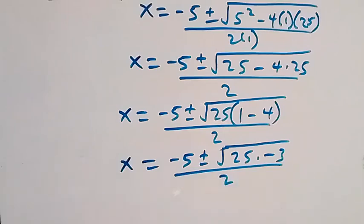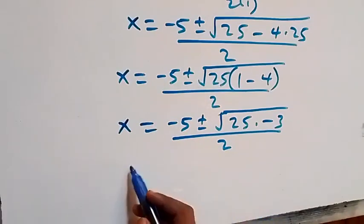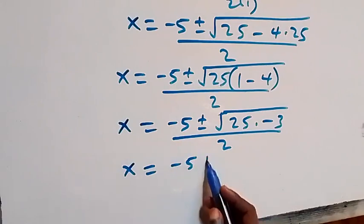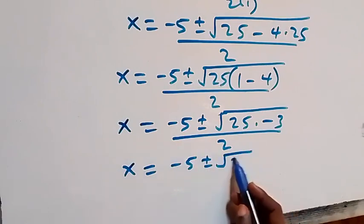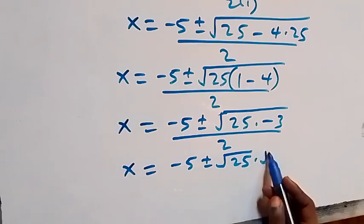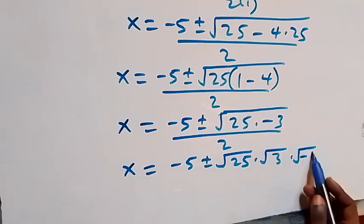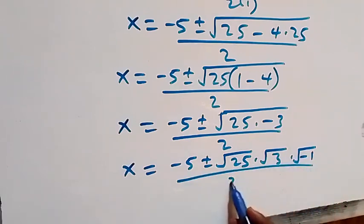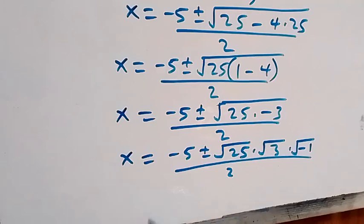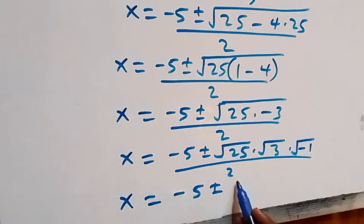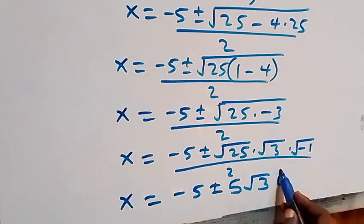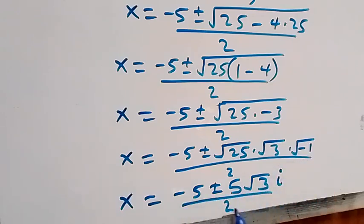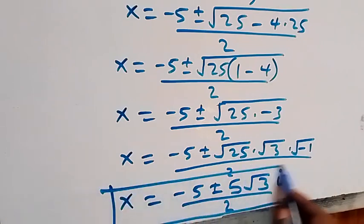We can write this as x equals minus 5 plus or minus root 25 times root 3 times root of negative 1, over 2. Since root 25 is 5 and root of negative 1 is i, this gives x equals minus 5 plus or minus 5i√3, over 2. These are also two complex solutions.